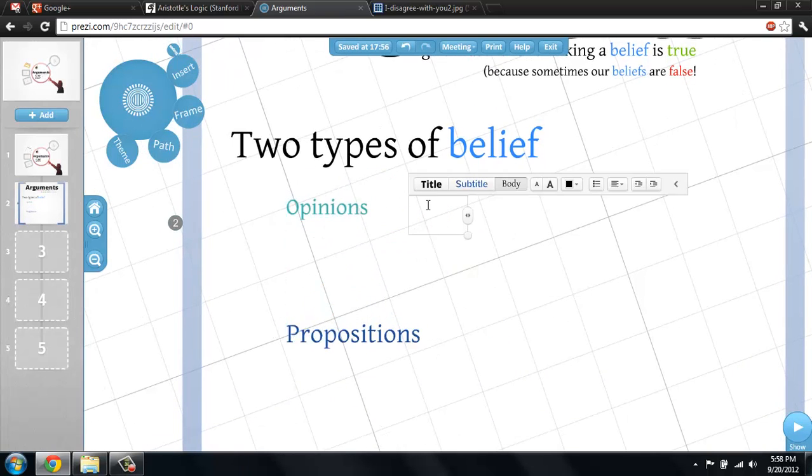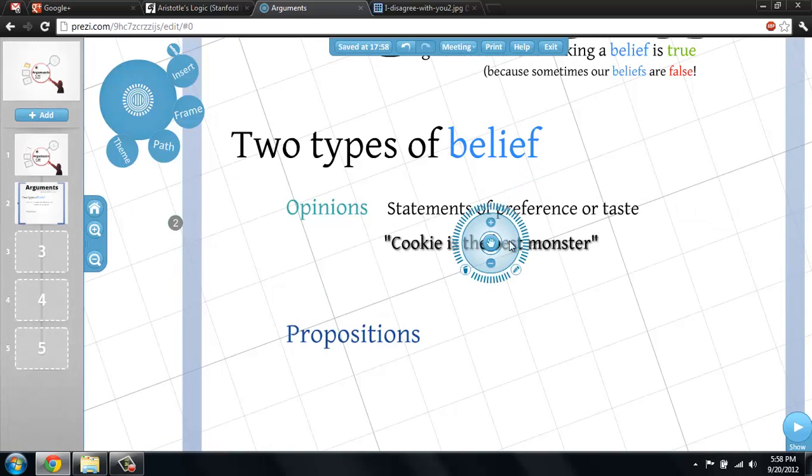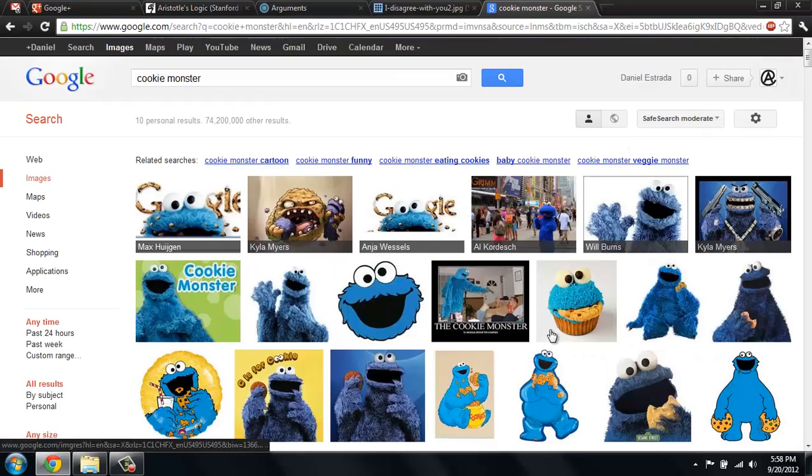Opinions are statements of preference or taste. For instance, that blue is the most beautiful color, or that cookie is the best of the monsters. It is strange to say that sentences like these are true or false, since people like so many different colors and monsters.